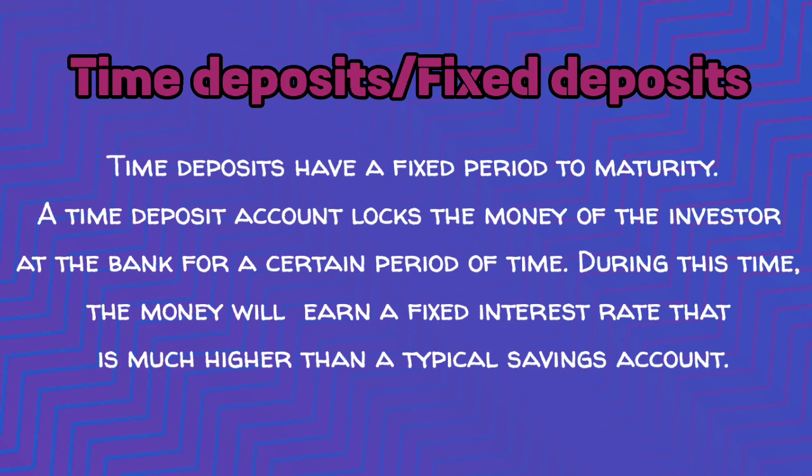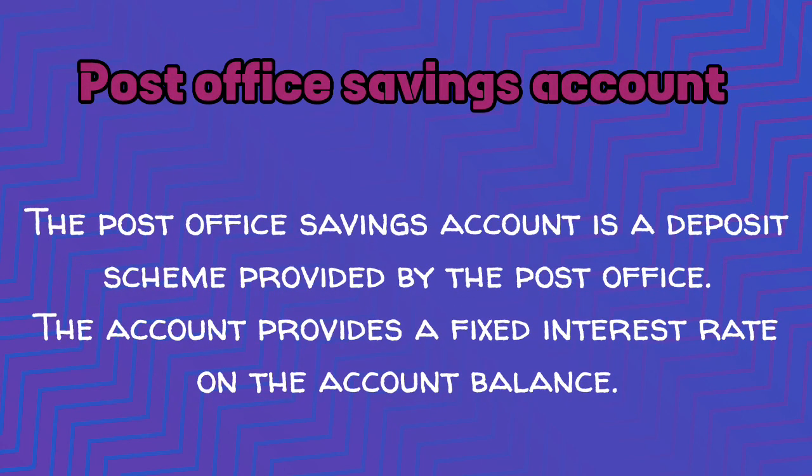Time deposits, also known as fixed deposits, have a fixed period to maturity. A time deposit account locks the investor's money at the bank for a certain period of time. During this time, the money earns a fixed interest rate that is much higher than a typical savings account. The post office savings account is a deposit scheme provided by the post office that provides a fixed interest rate on the account balance.